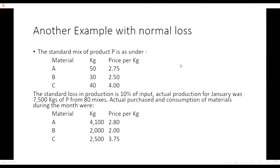Now look at the complex solution of a problem. Material A, B, and C with standard inputs: metal A 50 kg, metal B 30 kg, metal C 40 kg. Standard prices: A is 2.75, B is 2.5, C is 4. There is a normal loss of 10% and actual output was 7,500 kg. Actual inputs used: A is 4,100 kg, B is 2,000 kg, and C is 2,500 kg. Actual prices are 2.82 and 3.75.